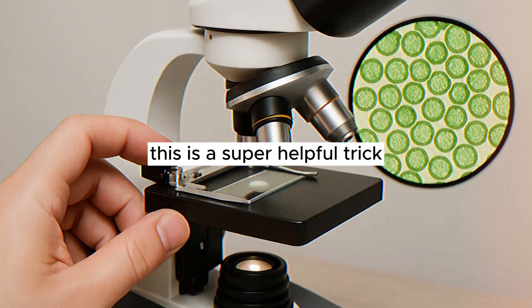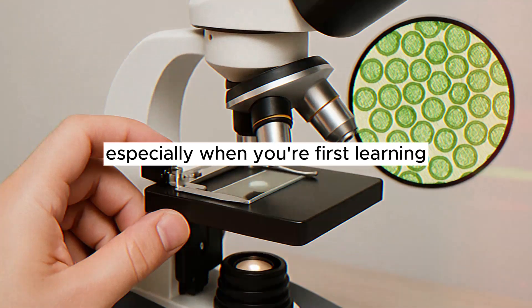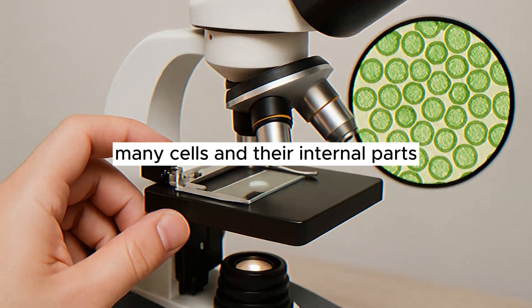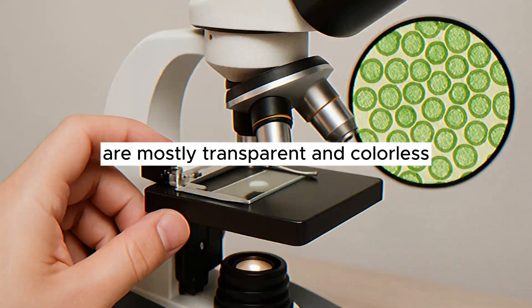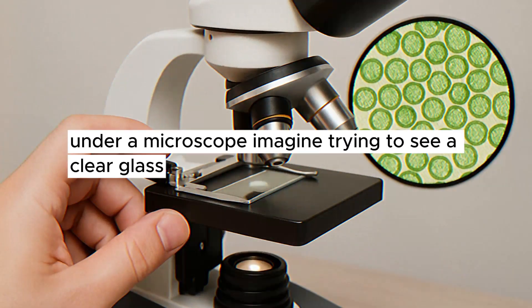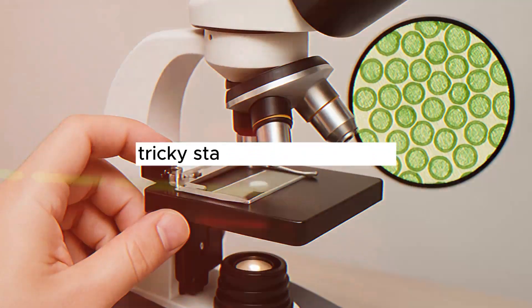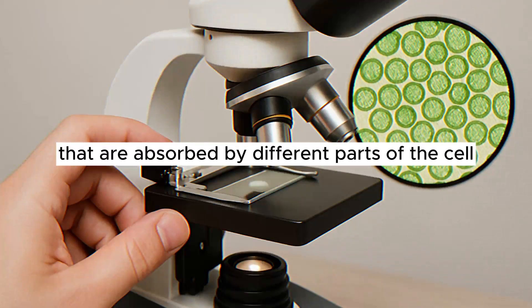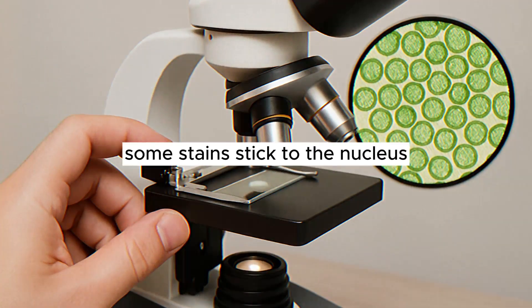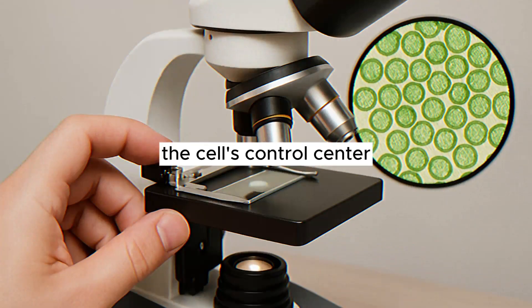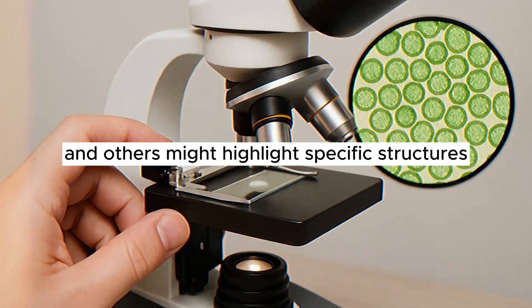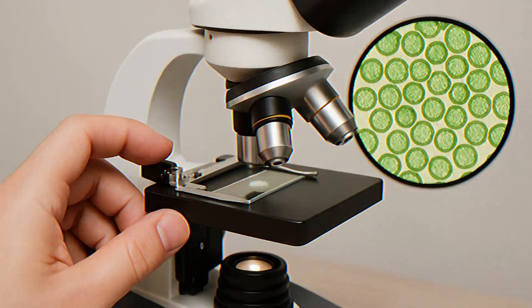Ah, staining. This is a super helpful trick, especially when you're first learning or looking at animal cells. Many cells and their internal parts are mostly transparent and colorless under a microscope. Imagine trying to see a clear glass marble against a clear glass table. Tricky. Stains are special dyes that are absorbed by different parts of the cell. Some stains stick to the nucleus, the cell's control center, some stick to the cytoplasm, the jelly-like filling, and others might highlight specific structures.